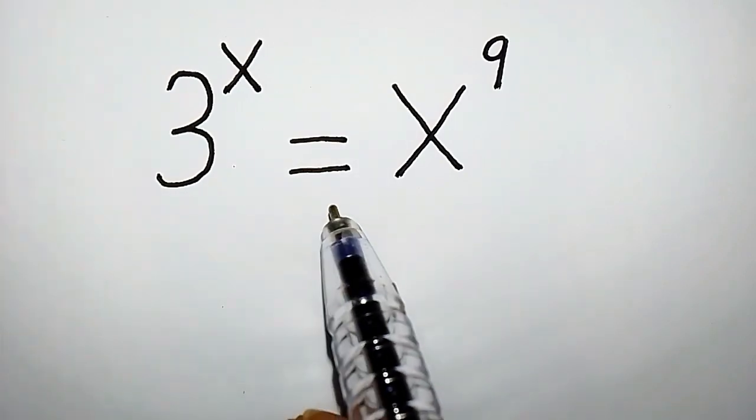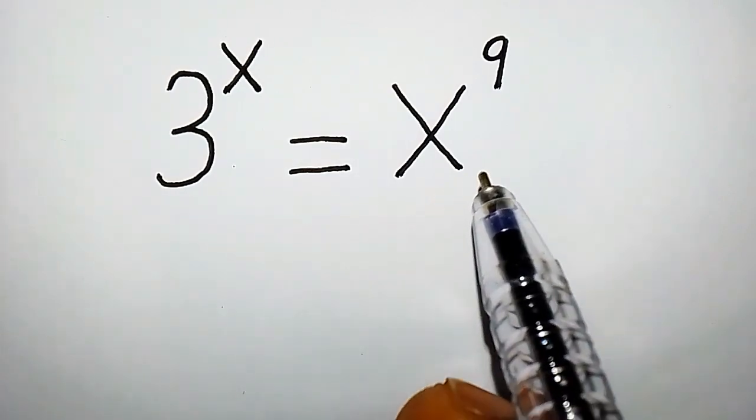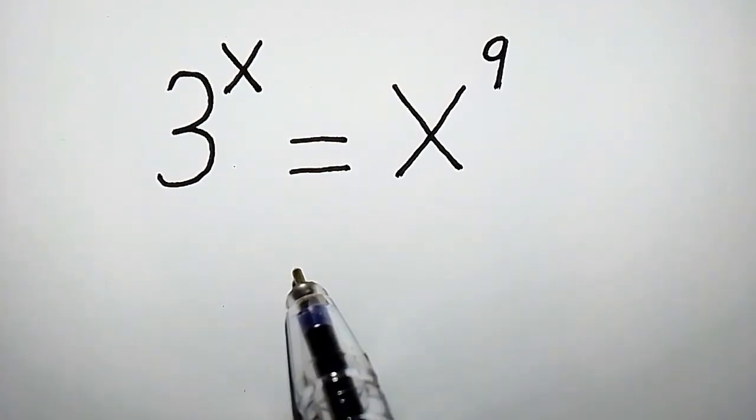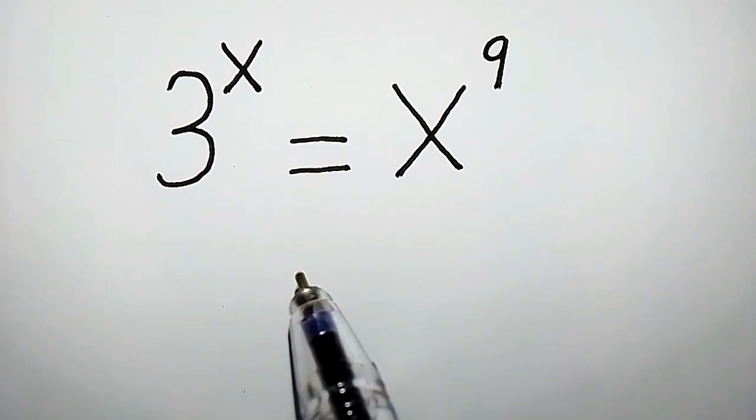3 to the power of x equals to x to the power of 9. How do we solve this exponential equation?